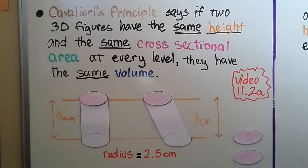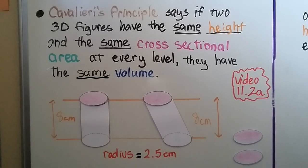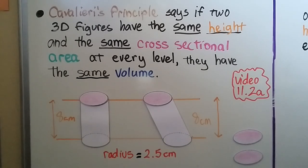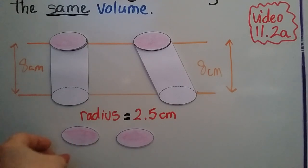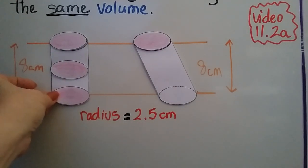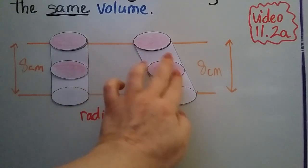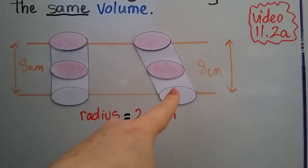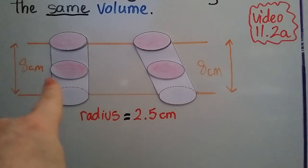Cavalieri's Principle says if two 3D figures, like these two cylinders, have the same height and the same cross-sectional area at every level, they have the same volume. Here we have a right cylinder and an oblique cylinder. If they have the same cross-sectional area at every level, both cylinders will have the same volume. These cross-sections are the same area and fit both cylinders. They're both eight centimeters high, and even though one is oblique, they have the same volume.